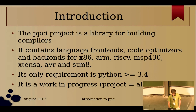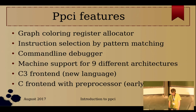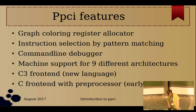The features of this library include a graph coloring register allocator — you may not know what that is, but it's inside a compiler and we'll come to that. There's also instruction selection by pattern matching, a command line debugger, machine support for nine different architectures, and a C front-end that's still in an early phase.